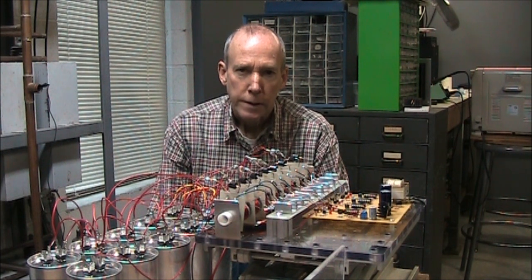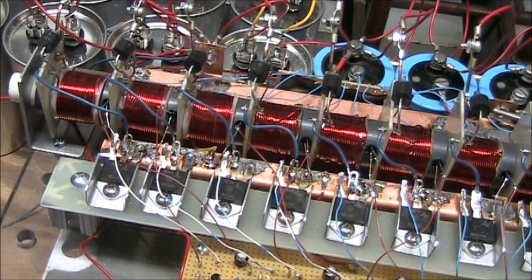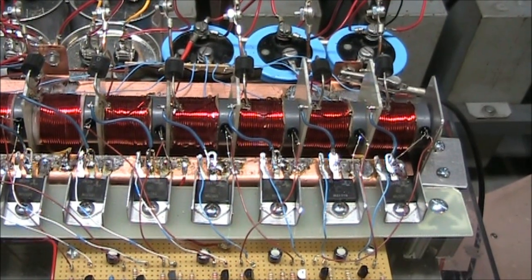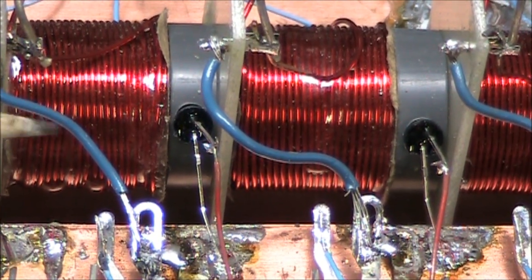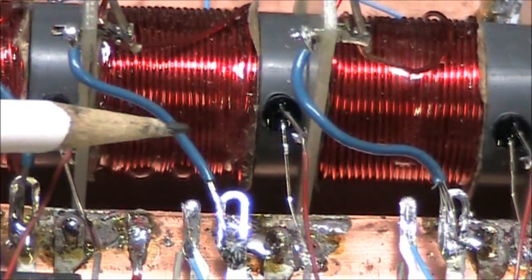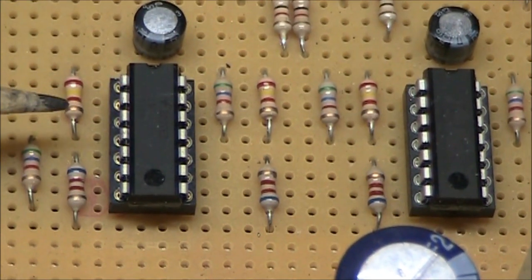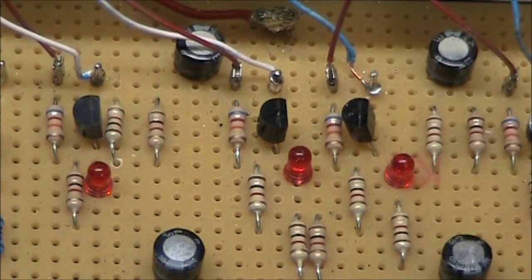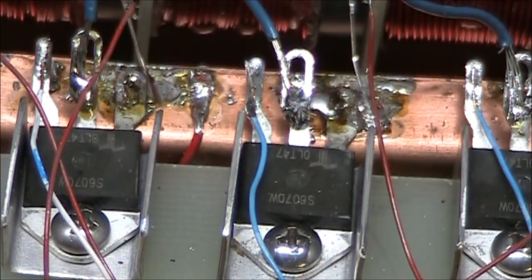Today we're going to have a look at coil gun design. This setup uses a series of switched coils. Each coil is triggered with an LED and phototransistor, and the signal from that goes to an LM319 comparator. The signal from that is amplified with a transistor and that drives the gate on the SCRs.